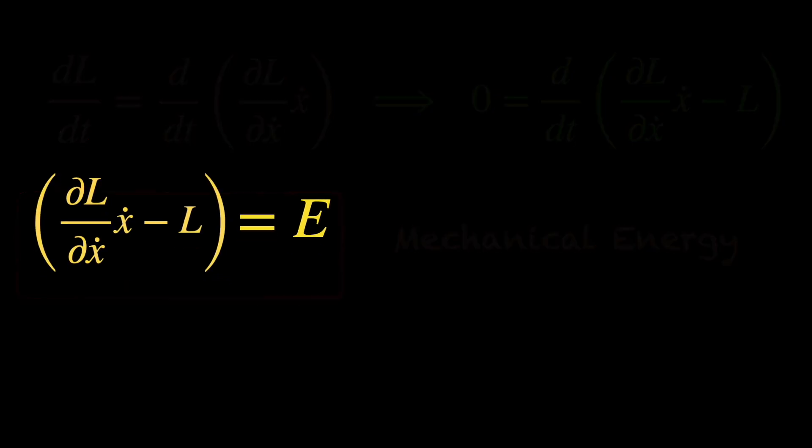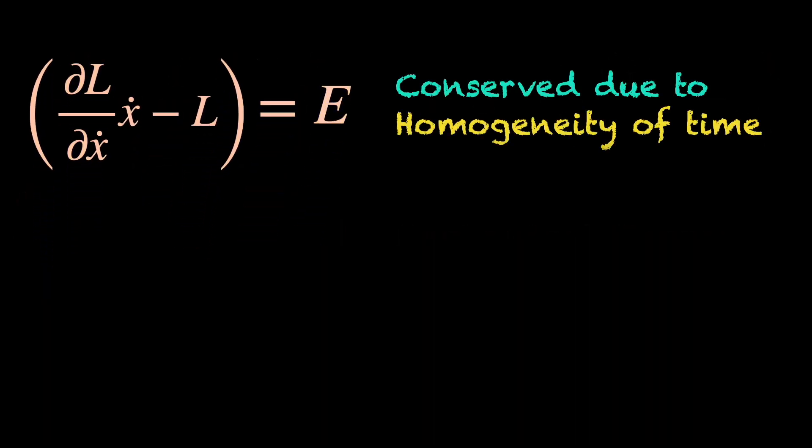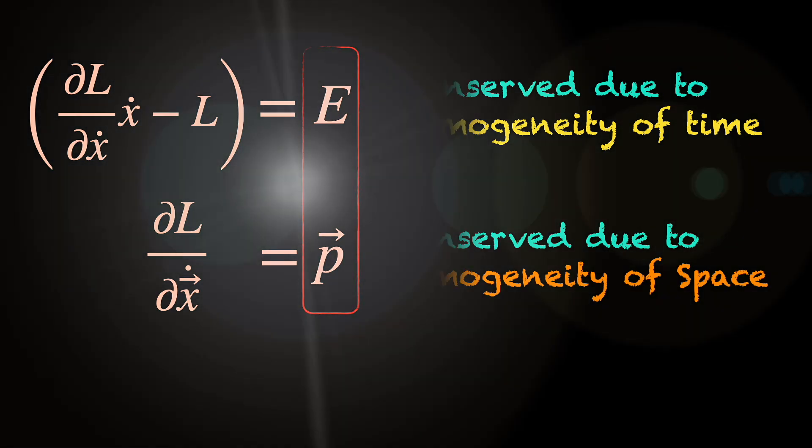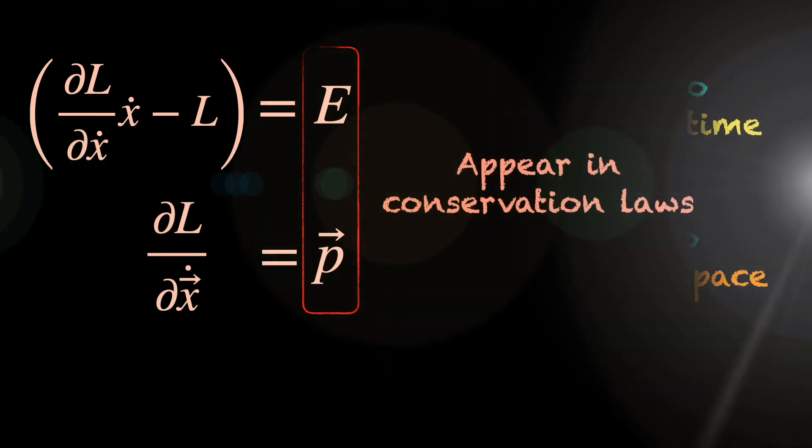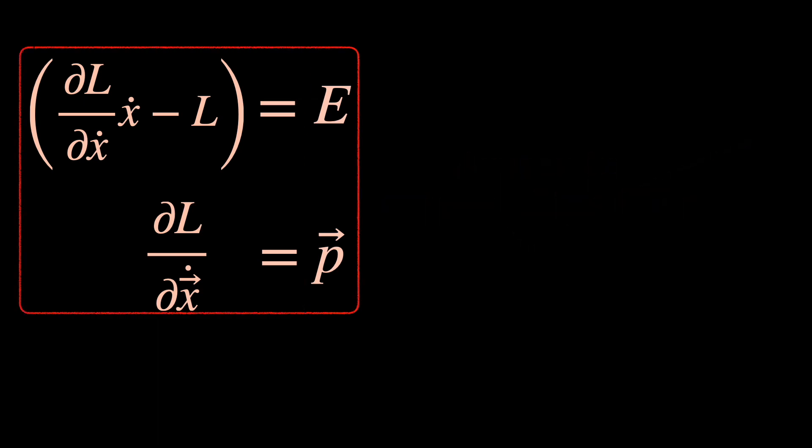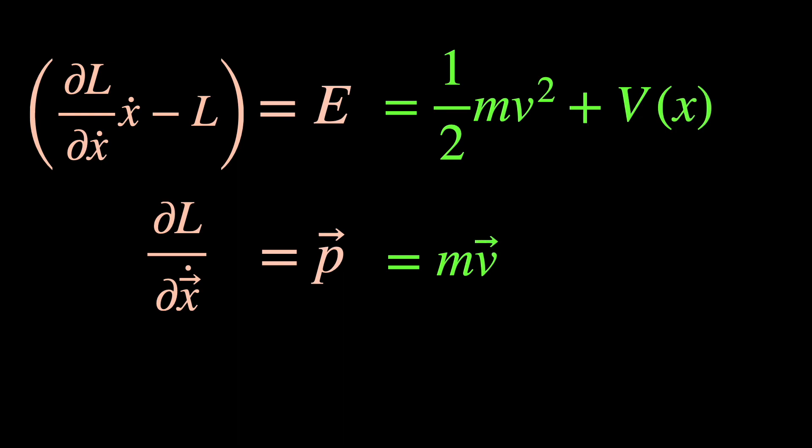So, hopefully now you understand what energy and momentum really are. They hold important places in physics since they appear in conservation laws which give us additional information that we can use to analyze the system. Before we wrap it up, let me point out that we have not shown here that these general definitions of energy and momentum indeed produce the expressions of momentum and energy that we are familiar with. Let's cover that in the next video.